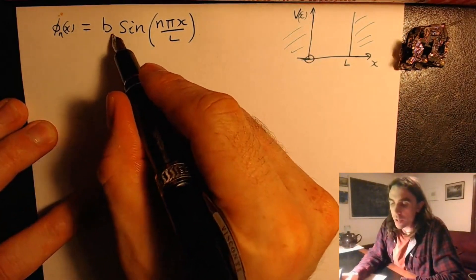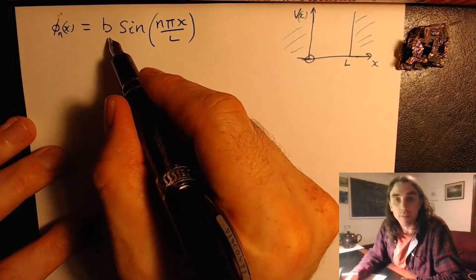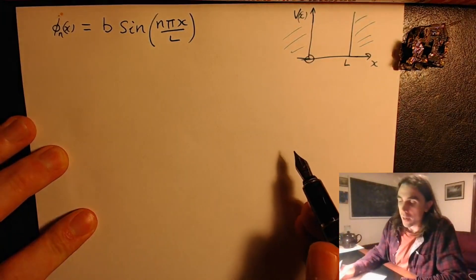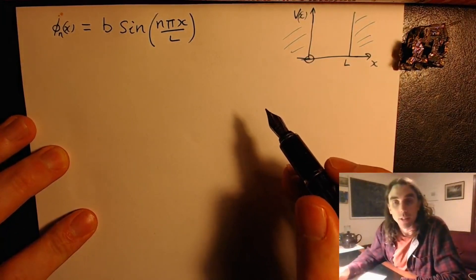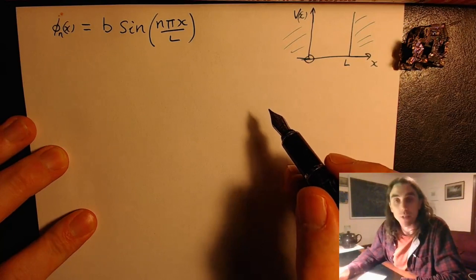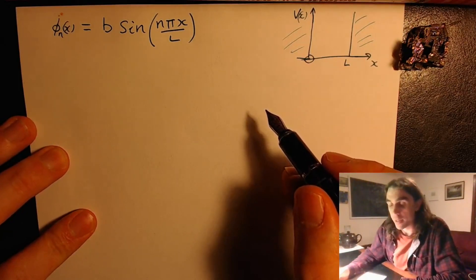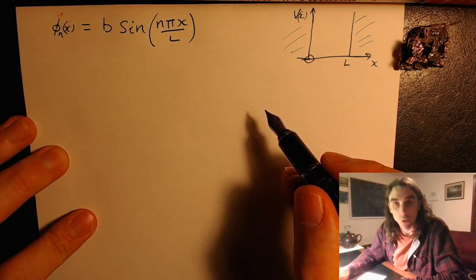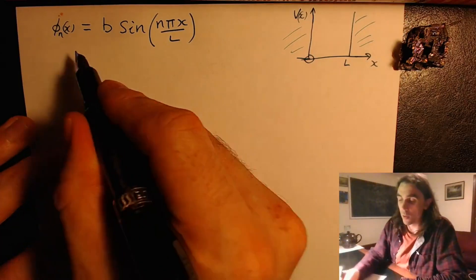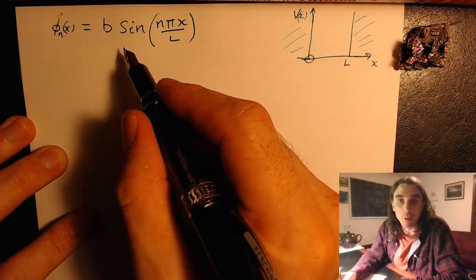So the question is, what's this coefficient here, this pre-factor? It wasn't determined by the boundary conditions, but actually we can always use the normalization, the fact that the integral of the probability density across all of space equals 1, to solve for the pre-factor at the front.